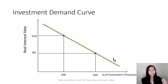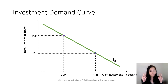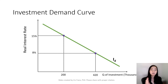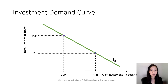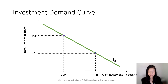Think about our law of demand — this is similar. When the price of a loan, meaning the real interest rate, goes up, your quantity demanded for investment, or for borrowing from the bank to invest, will go down. Therefore, there is a negative relationship between the real interest rate and the quantity demanded for investment, and we're going to see a negatively sloped investment demand curve, where the higher the real interest rate, the lower the quantity of investment.